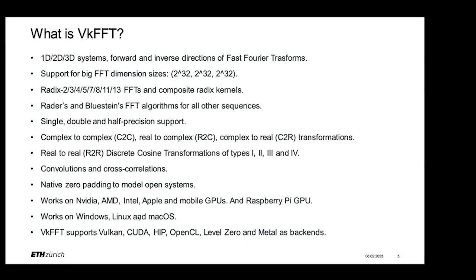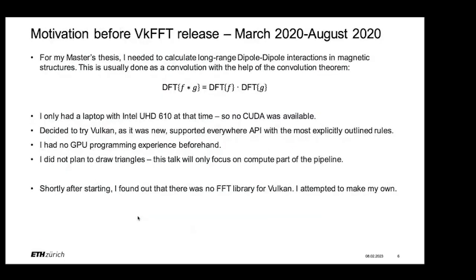What other libraries don't have is the real-to-real transforms, which I will speak about later. Convolutions, cross-correlations, zero-padding are also nice features to have. But what people probably like most is that it's fully cross-platform with the help of Vulkan — it works on basically any GPU that supports Vulkan and on any OS. The demand for other APIs was really big, so I just added them as well.